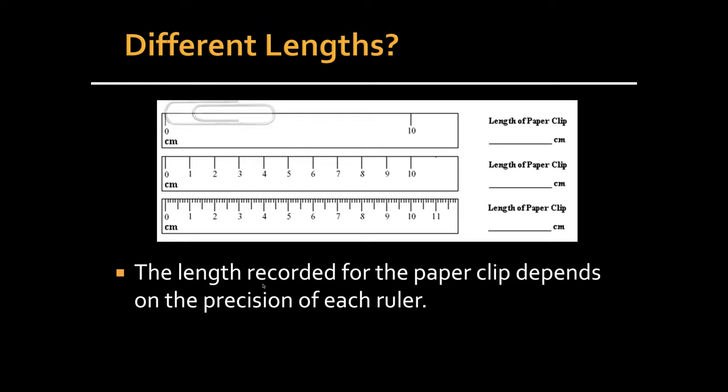Now, let's say we're measuring the same paper clip on three different rulers. In this first one, it's a little less than halfway between 0 and 10. So we could call it 4 centimeters. In this second ruler, it's between 4 and 5, a little less than halfway. So we can call it 4.4 centimeters.